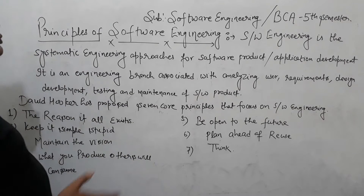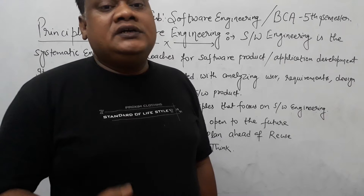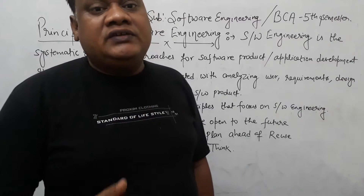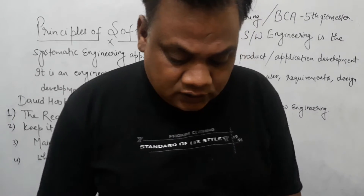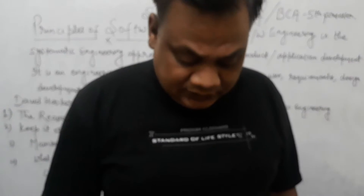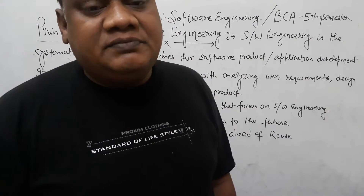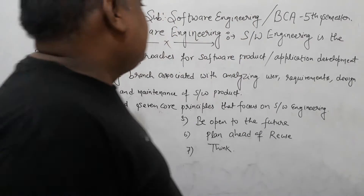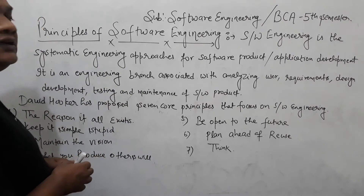What principles do we follow in software engineering? What steps do we follow so that we can easily build our software in a very simple manner? First of all, we have software engineering in DCA 5th semester. We have completed the data flow diagrams and the symbols. When we use flowcharts and DFDs, what is the importance of the symbol? We have studied this before. So what is the most important topic of software engineering? What are the principles of software engineering? We are going to discuss this.